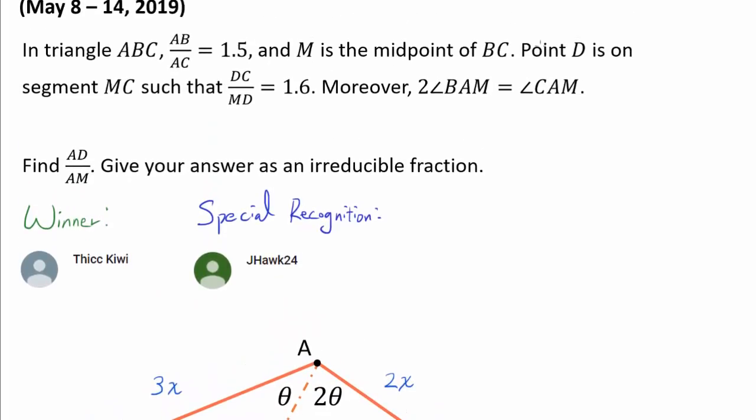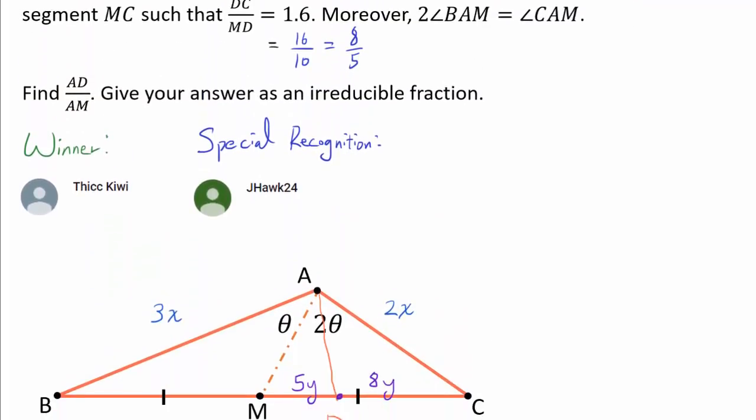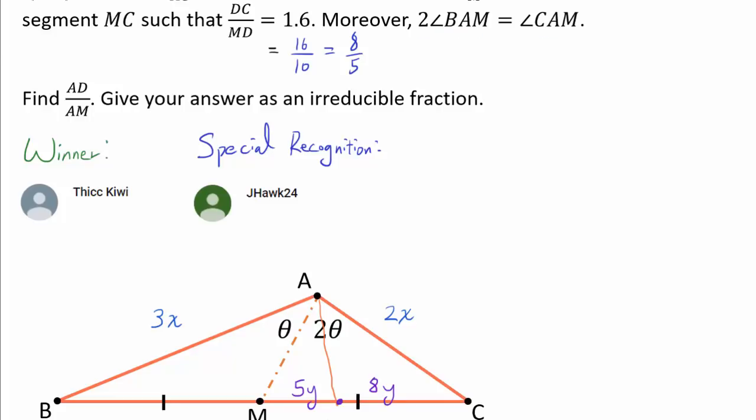Let's read on. We have a point D on segment MC such that DC over MD is 1.6, so DC is going to be longer than MD. 1.6 can be written as 16 over 10 or 8 over 5, so we can work with integers as well. We know DC over MD, so we know DC is longer. So here is our point D, and we know the ratio is 8Y to 5Y. And to finish it all off, we have 2 times angle BAM being angle CAM. We have them marked in the diagram from theta to 2 theta. And we wish to find AD over AM and write our answer as an irreducible fraction.